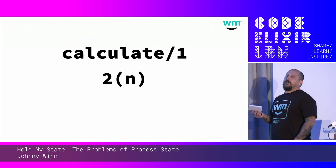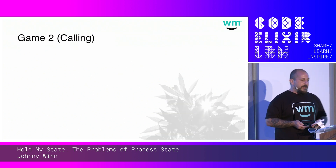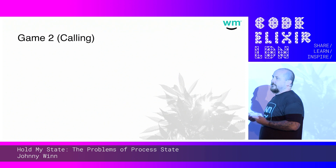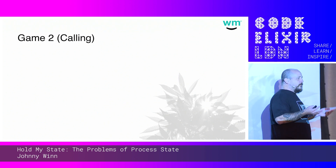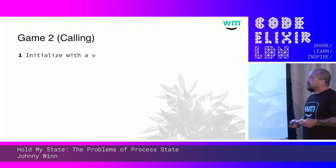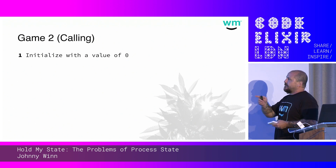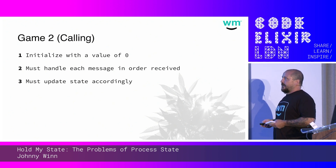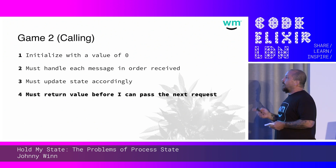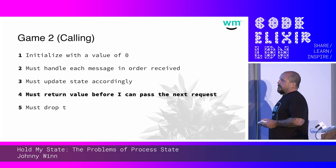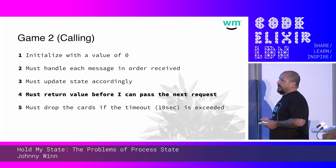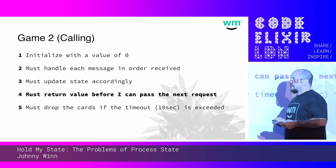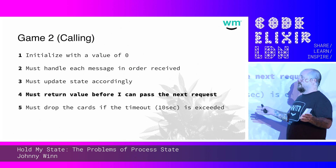How can we help Martin? Our next game, we're going to use calling. The cool thing about calling is I can't hand him another message until he's done with the message I've already sent him, so it allows some almost pseudo back pressure. The same sort of rules apply. You're initialized with zero, you must handle each message as it's received, you must update state accordingly, and you must return a value before I can pass you the next request. You must drop in the case of a timeout of 10 seconds.